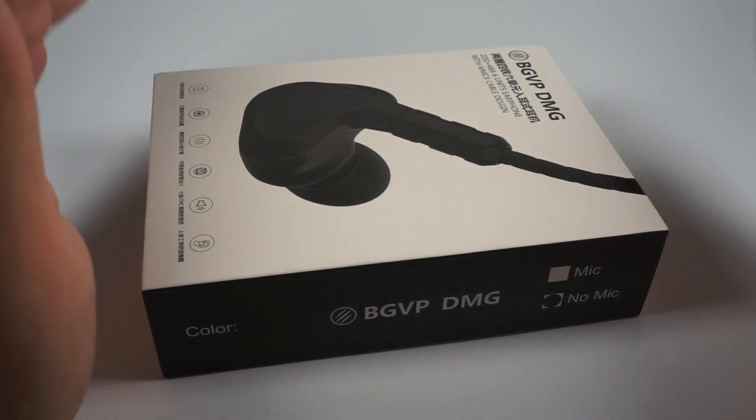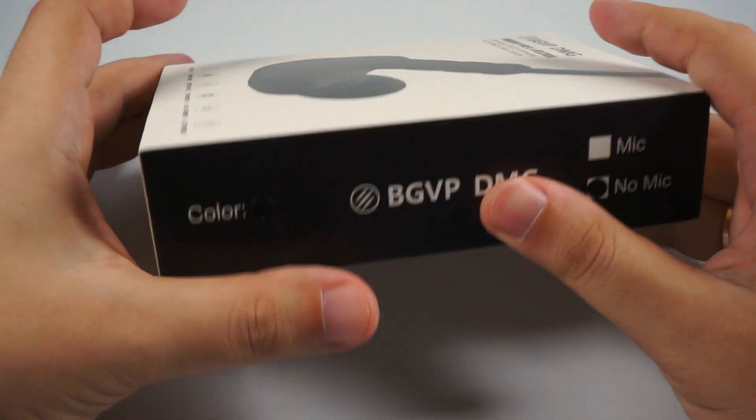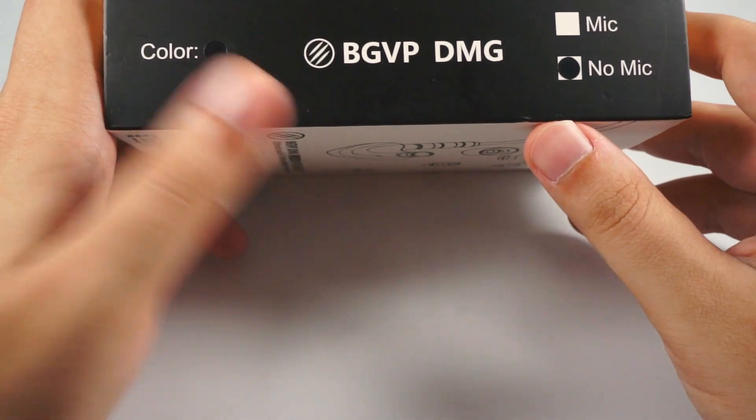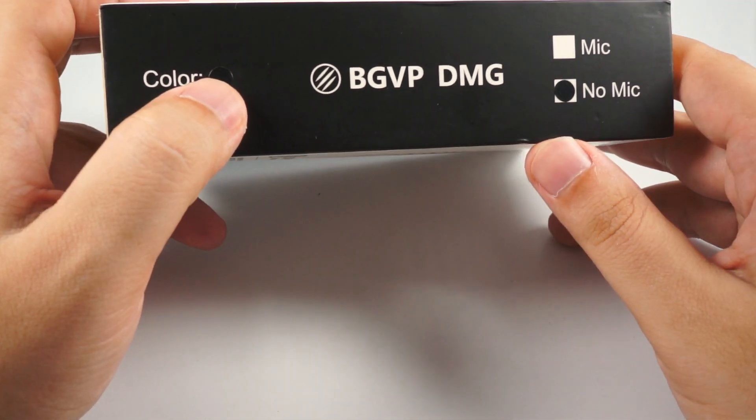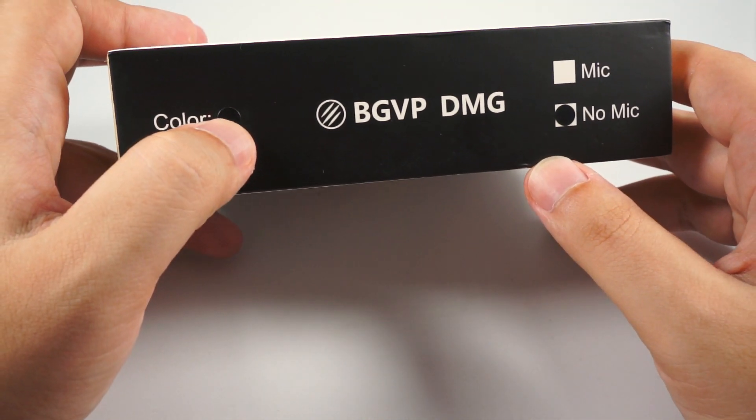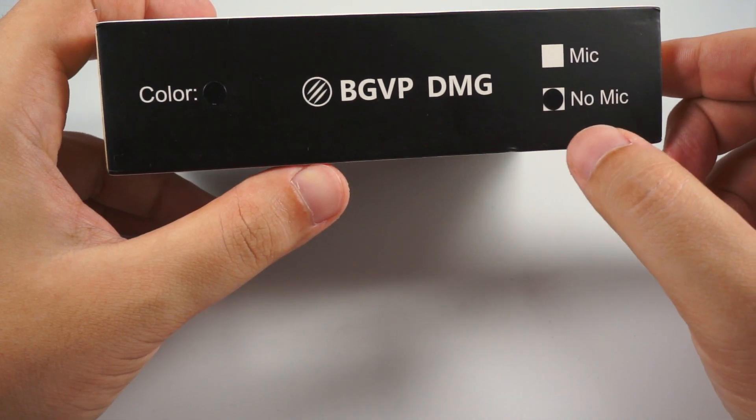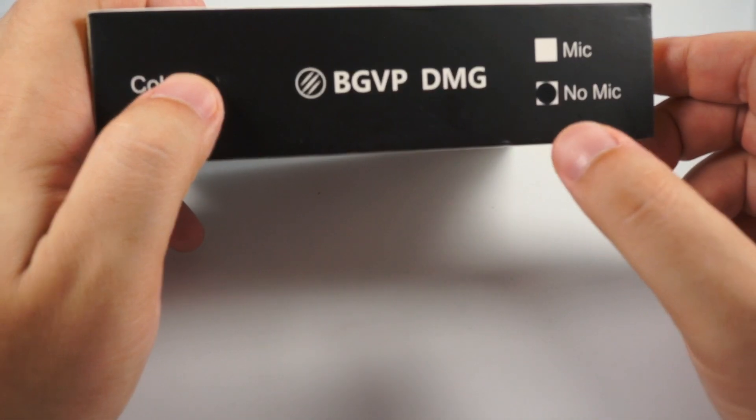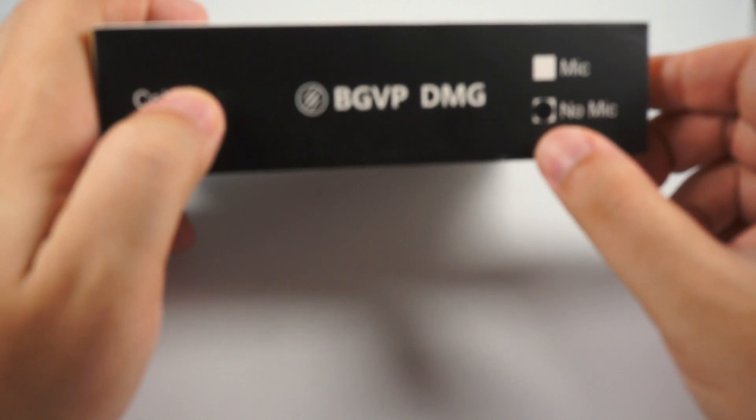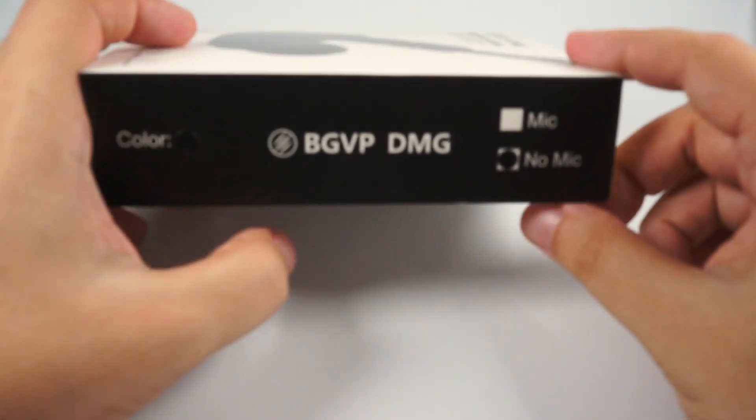The box is fairly simple but it's nice, even for more expensive models. On the side is marked color because you can get them in different colors. I will put links to Amazon and AliExpress in the description. Mine are black and version without microphone, but you can get one with a microphone.